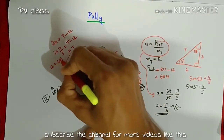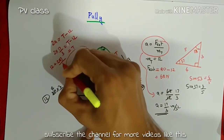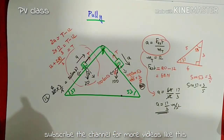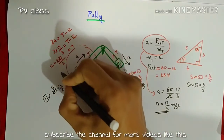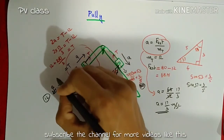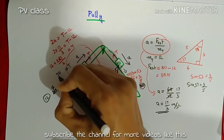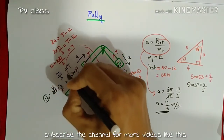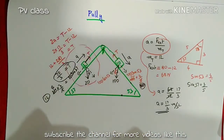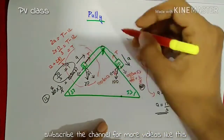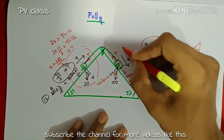Therefore T equals 12 plus 2 into 17/3, and simplifying gives T equal to 70 by 3 Newton.